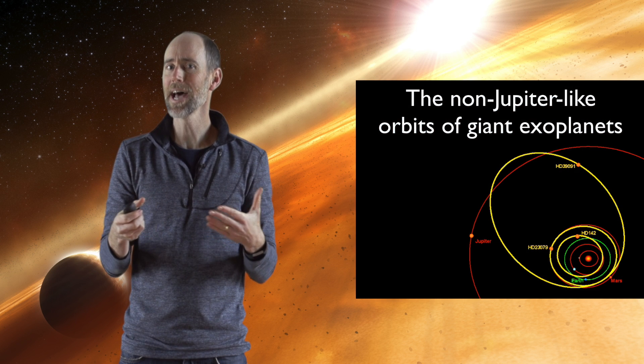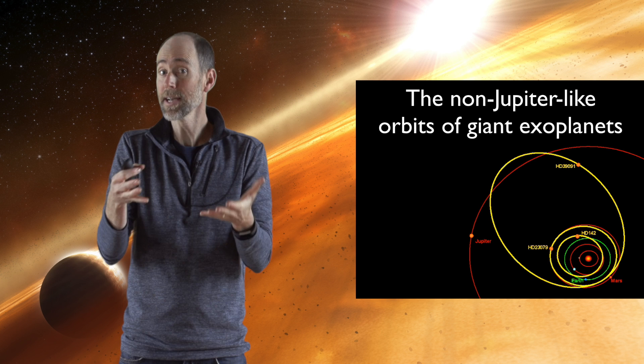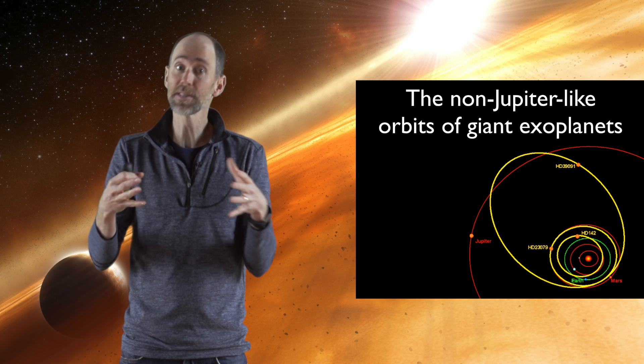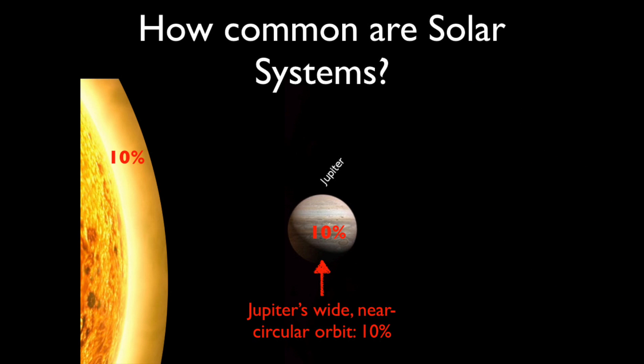There's only about 1 in 10 planets like Jupiter around other stars that have orbits like Jupiter's. The fact that our Jupiter has a wide, nearly circular orbit is about a 10% probability again.